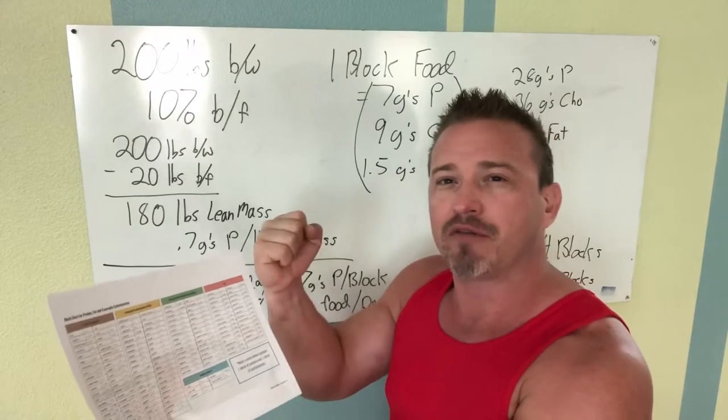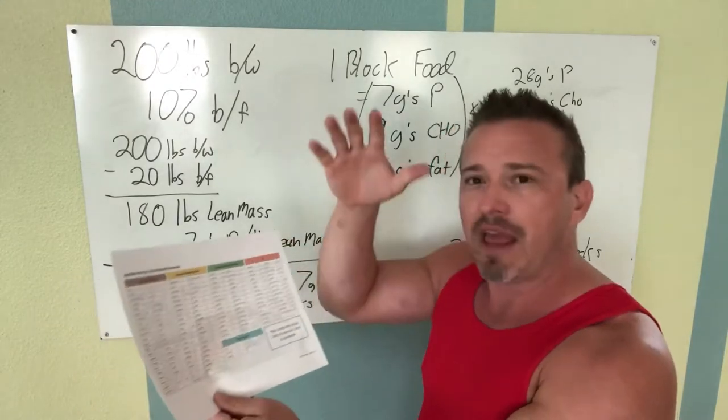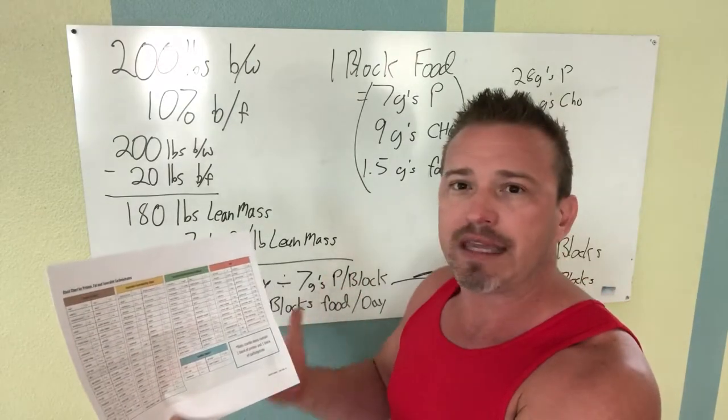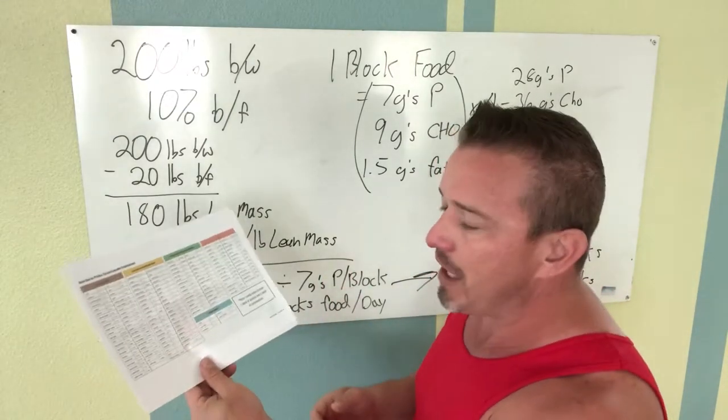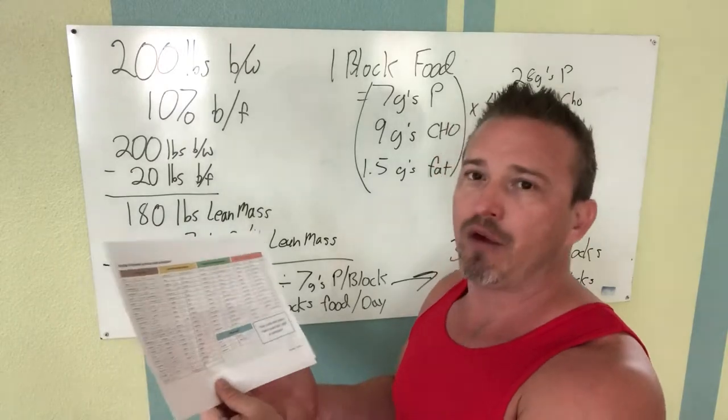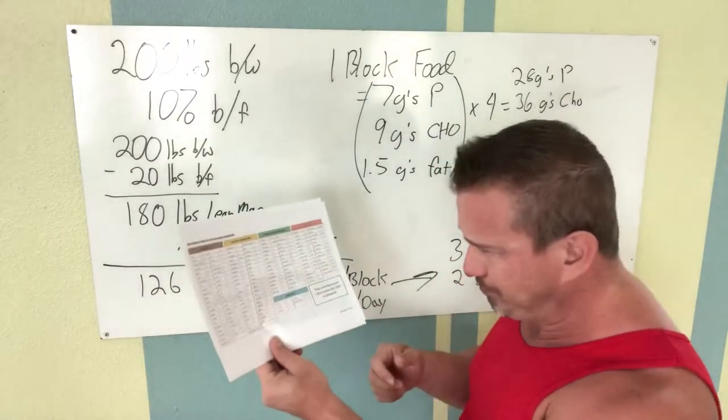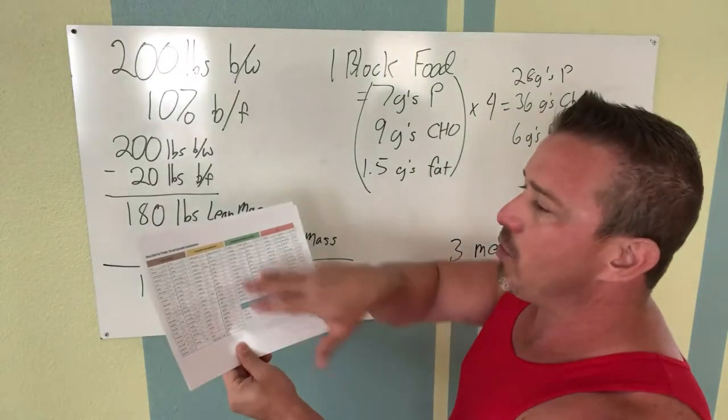And then the rest of it would go through with your fibrous carbs, things like broccoli, cabbage, any type of leafy green vegetable. You can eat as much of those as you want. You can't overdose on green vegetables. If you're hungry, eat a little bit more veggie.